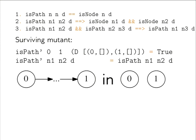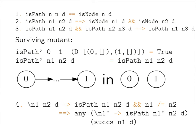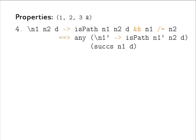Property 4: if there is a path between two different nodes in a digraph, then in one of the successors of the source node there must be a path to the destination. This kills the mutant because there are no successors of 0, so the mutant cannot validate this property and will fail.